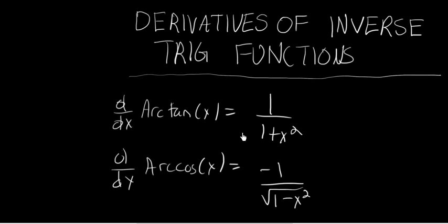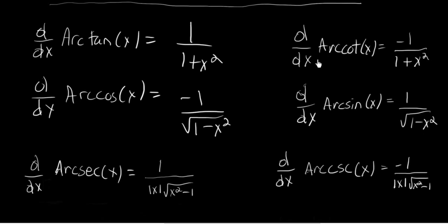We can go through a similar procedure for finding the derivatives of the remaining four inverse trig functions. We will find that the derivative of the arccotangent function is minus 1 over 1 plus x squared. The derivative of the arcsine function is 1 over the square root of 1 minus x squared. The derivative of the arcsecant function is 1 over the absolute value of x times the square root of x squared minus 1. And the derivative of the arccosecant of x is minus 1 divided by the absolute value of x times the square root of x squared minus 1.